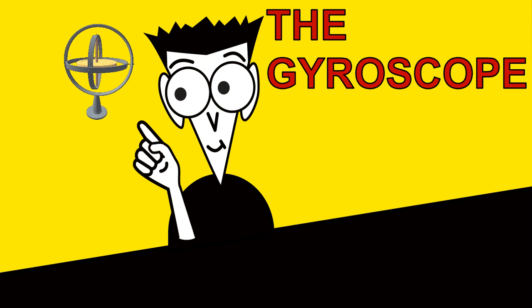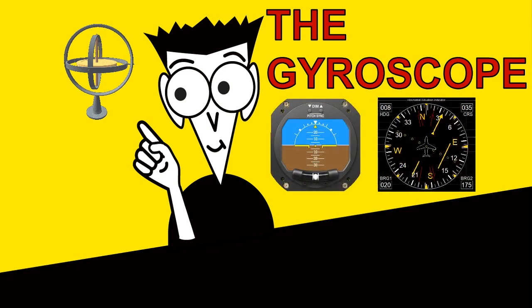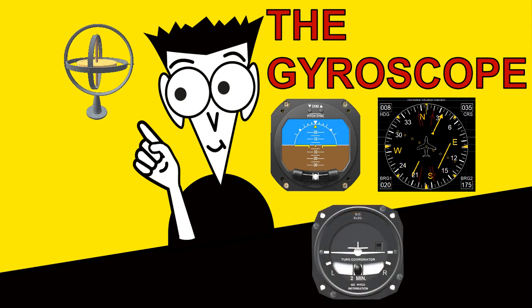The gyroscope is used in many aircraft instruments such as the artificial horizon, HSI, which is the main directional indication, and the turn and slip indicator. Gyroscopes are also used in inertial navigation systems, but these days they tend to use ring laser gyroscopes. More on that later.